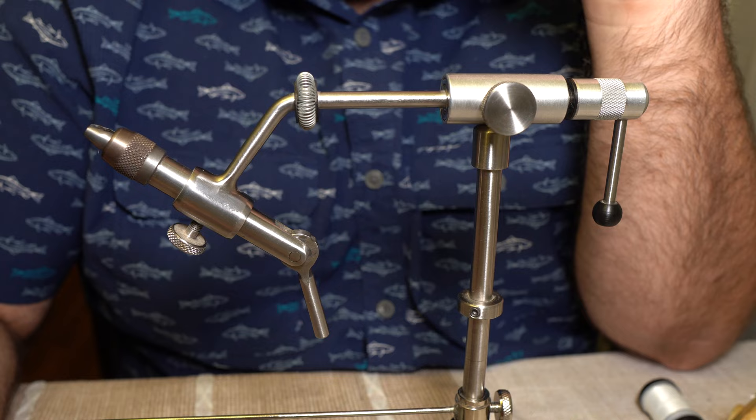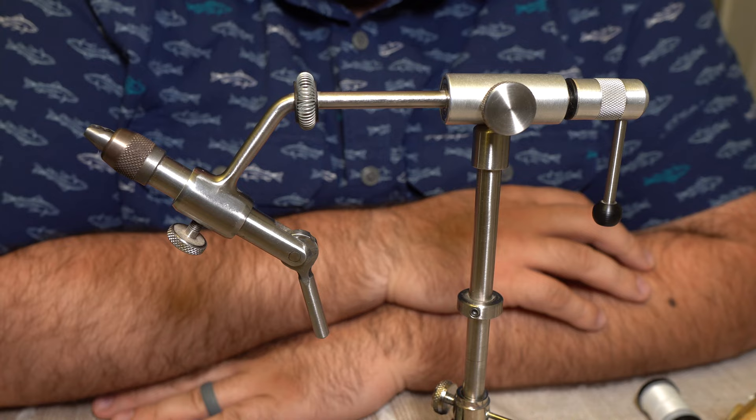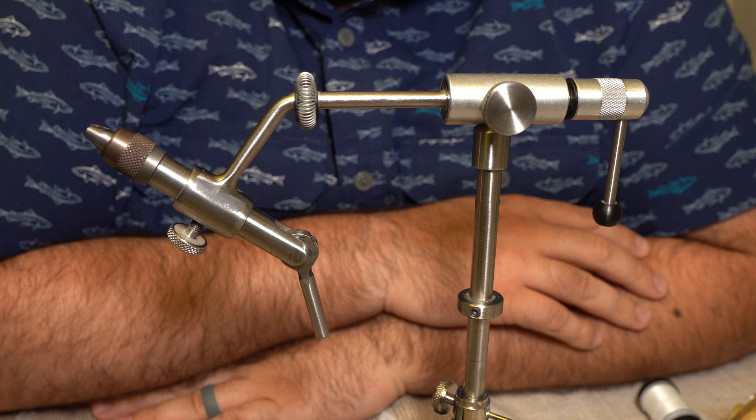I will say, this is a monstrous vise. It is just, from front to back, it is just large. So if you want something petite on your fly tying desk, this is not what you want. Because it is just a big piece of metal.